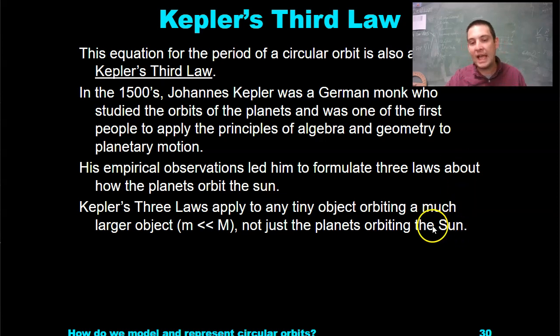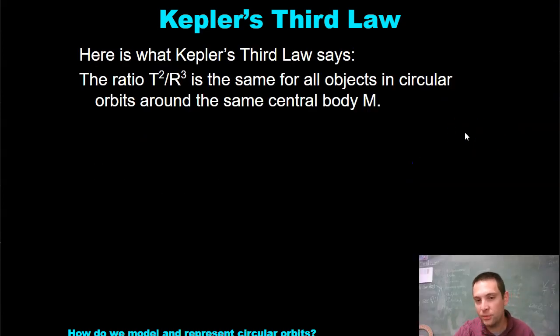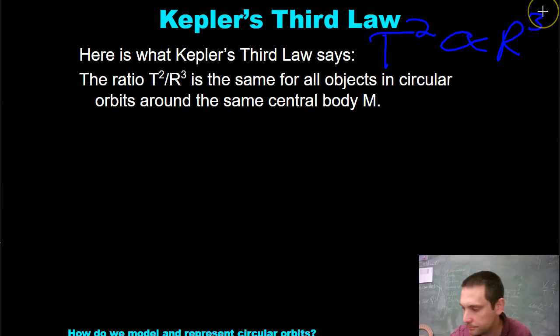His three laws apply to any tiny object orbiting a much larger object, not just the planets orbiting the Sun. What his third law says is that T²/R³ is the same for all objects in circular orbits around the same central body. Or, put in a different way, T² is proportional to R³.